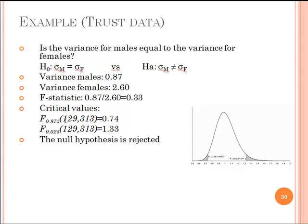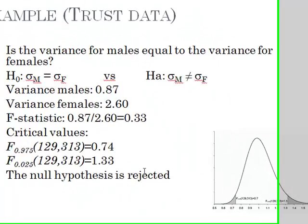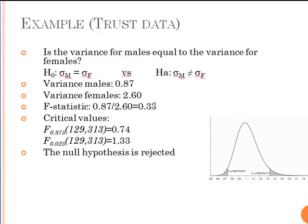For 5% confidence interval, which is F.975 for these degrees of freedom from the tables, you can get the statistics as 0.74. And for 0.025, for this side of the distribution, it's 1.33. So this value of 0.33, calculated value of 0.33, is falling in the gray area here.